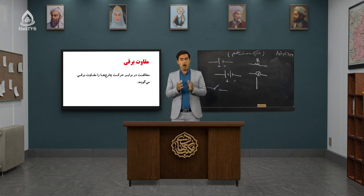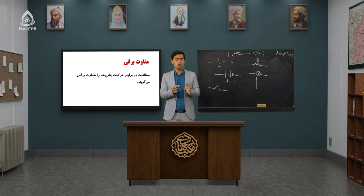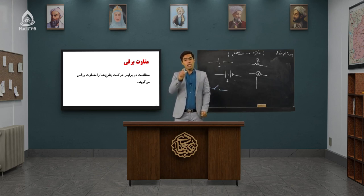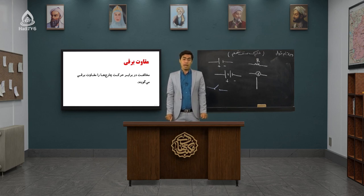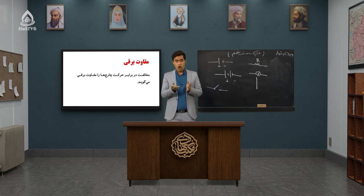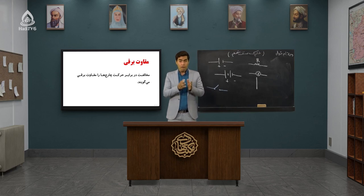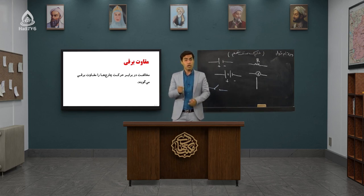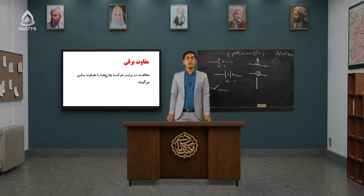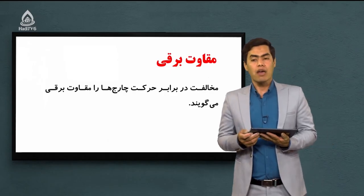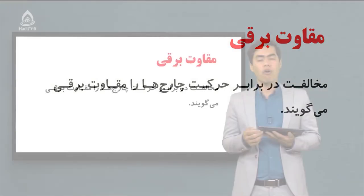فرض کنید که شما در یک محیط شلوغ هستید؛ سرعت حرکت شما اینجا کم می‌شه. شما ممکنه با افراد مختلف یا با اشیای مختلف برخورد کنید و مجبور می‌شین که آهسته حرکت کنید. این مثال را ربط می‌دیم با بحث مقاومت برقی. فرض کنید وقتی که الکترون‌ها در یک سیم فلزی شروع به حرکت می‌کنن، این الکترون‌ها با اتم‌ها و مولکول‌هایی که در این سیم فلزی وجود دارن برخورد می‌کنن. سرعت حرکت الکترون‌ها کم می‌شه.